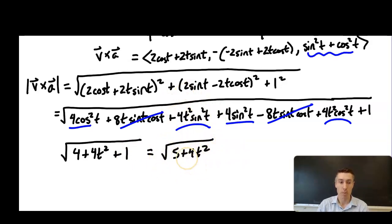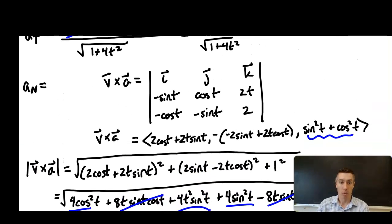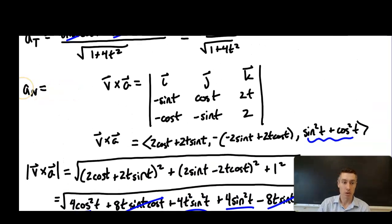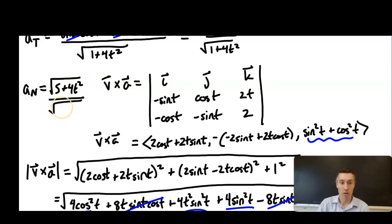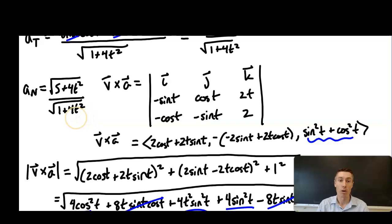So the normal component of acceleration is √(5 + 4t²) over √(1 + 4t²). This gives us a function in terms of t that we can use to compute the normal component of acceleration at any point.